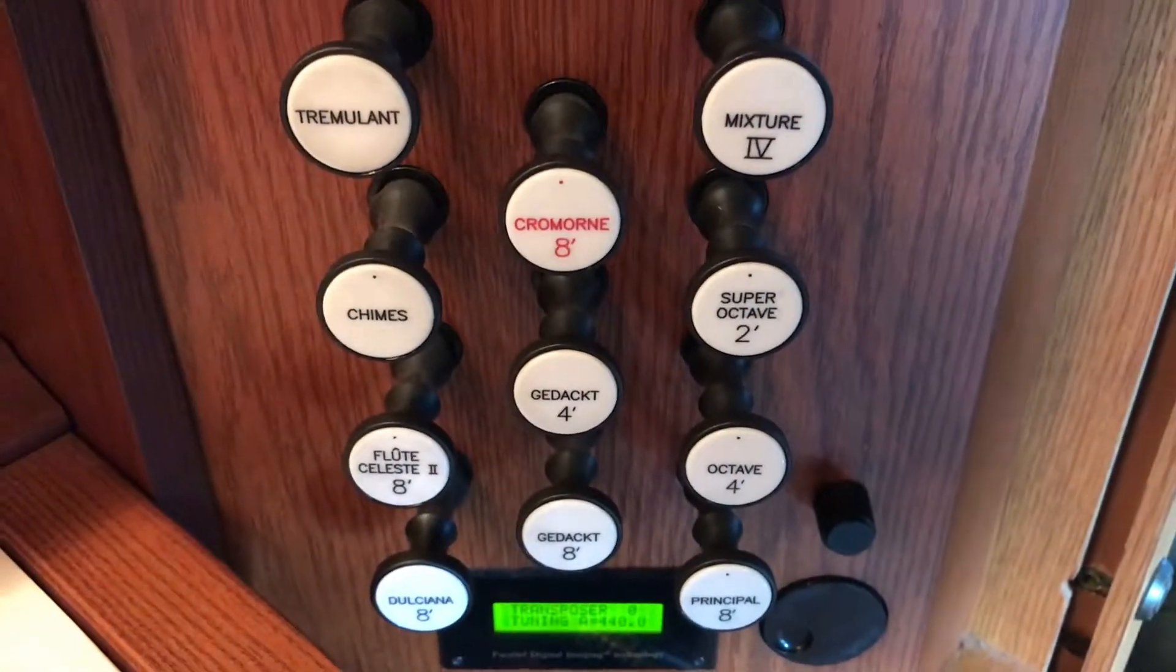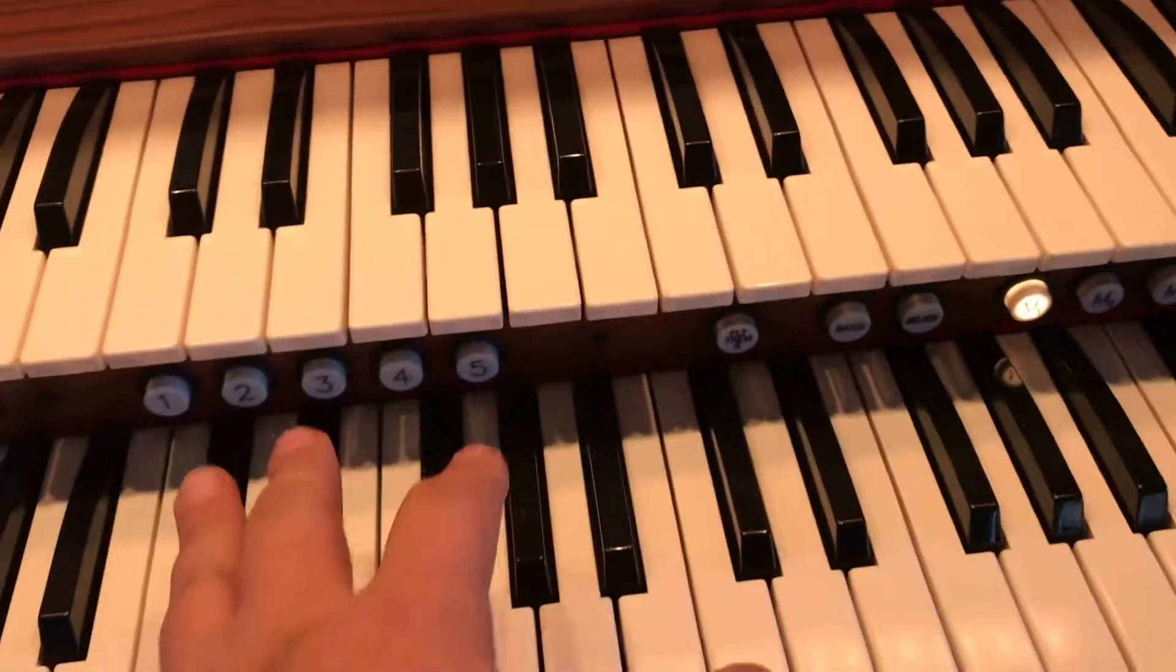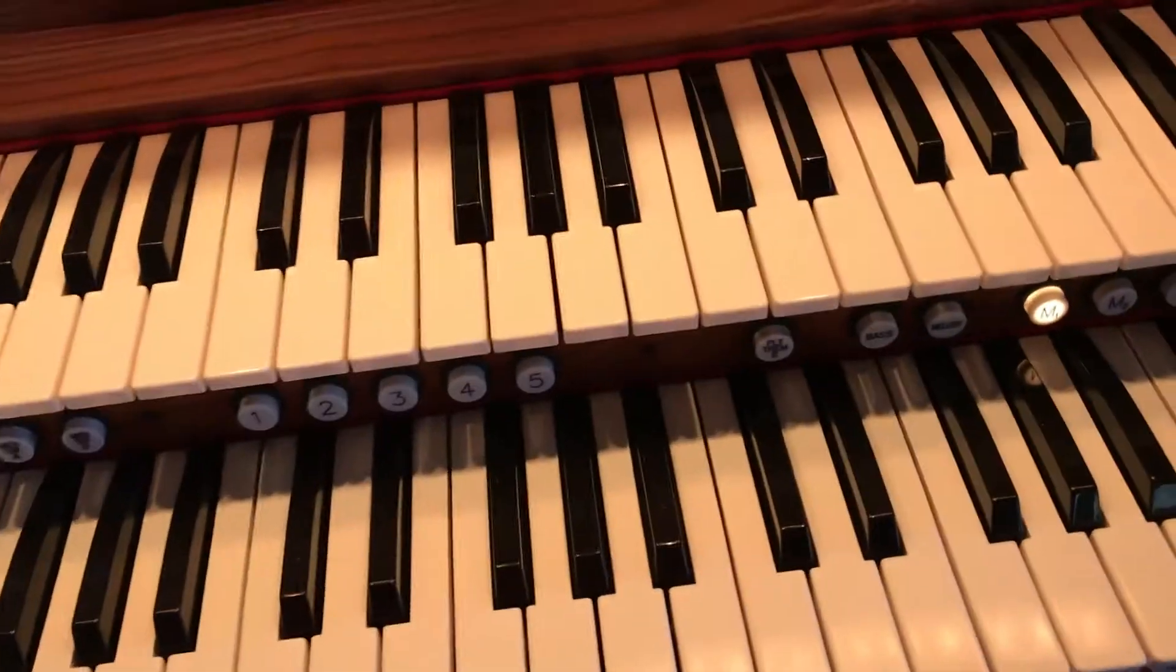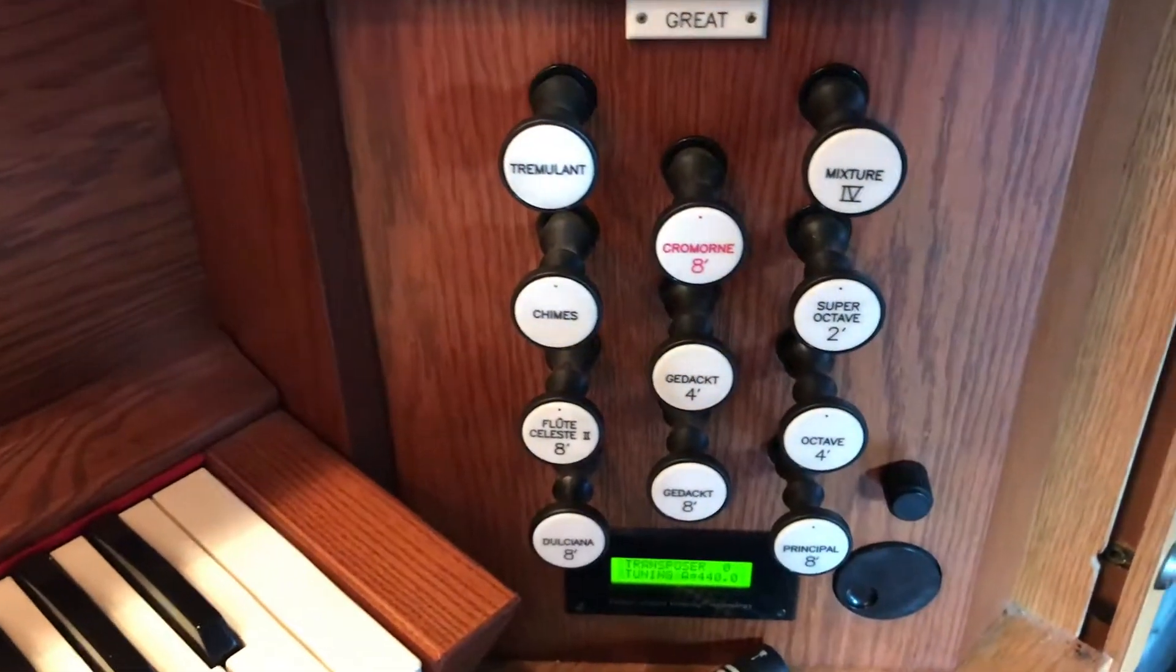So we're going to start this time with the great division, and what that is, is that's the keyboard, remember from the last video, this is the keyboard that is played from the bottom. Okay, and basically, we're just going to start, that would be my cat jumping up the ladder.